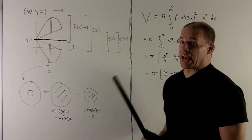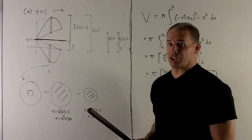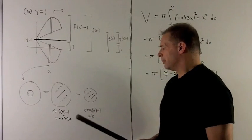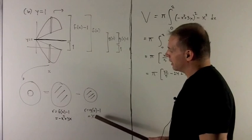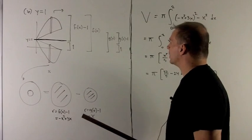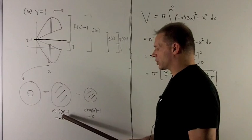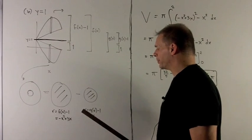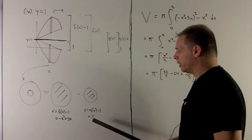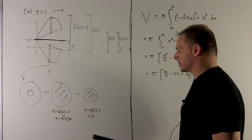Let's see what we get. So this actually makes a situation that's much nicer than the one we had before because these functions are a little bit nicer to integrate. So for the big circle, our radius is -x² + 3x, and then for my little circle, I'm just going to wind up with x itself.